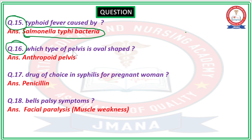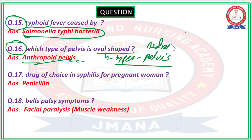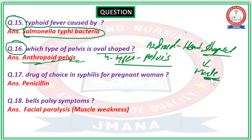Question number 16: Which type of pelvis is oval-shaped? In females, there are four types of pelvis. The anthropoid pelvis is oval-shaped and is most commonly found in females. The android pelvis, on the other hand, is heart-shaped and is most commonly found in males.